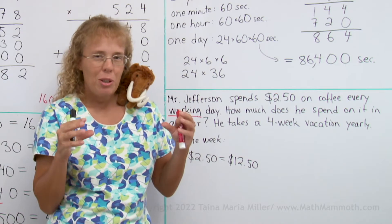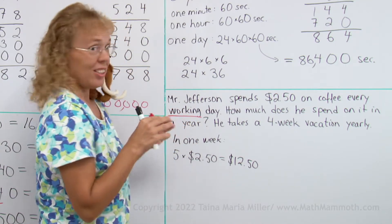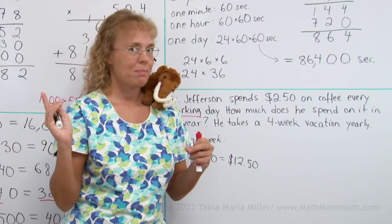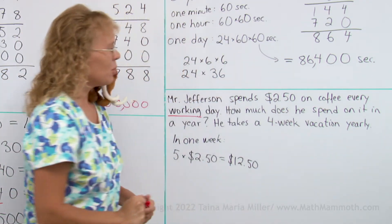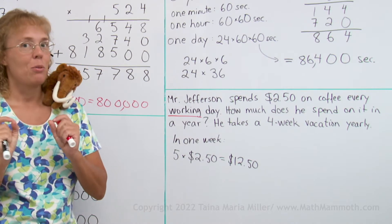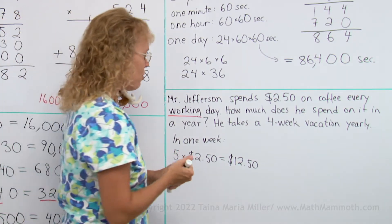Okay, that's how much in one week. Now, how many weeks are there in a year? 52 weeks. But he takes a four-week vacation, so there's only 48 working weeks for him. 48 weeks.